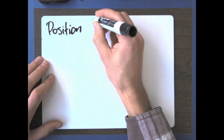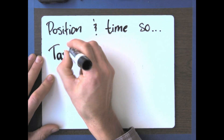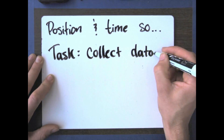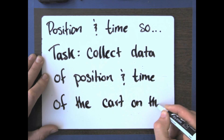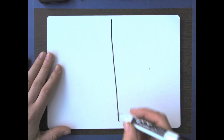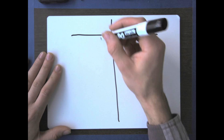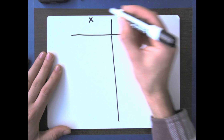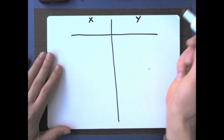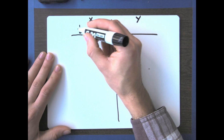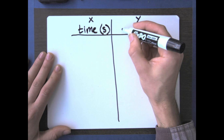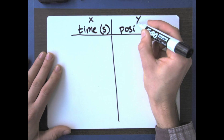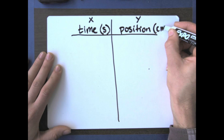In class, we agreed that measuring speed is pretty difficult, but we can measure position and time. Your task is to collect data of position and time of the cart as it goes down the track. Let's start by making a data table. On the x-axis we'll measure time in seconds, and on the y-axis we'll measure position in centimeters.